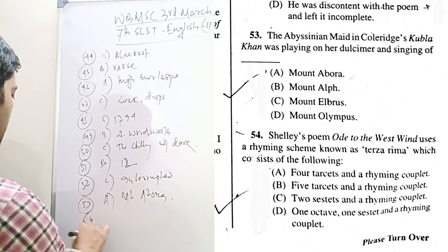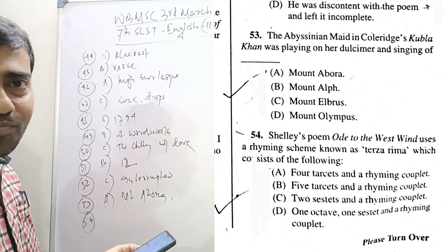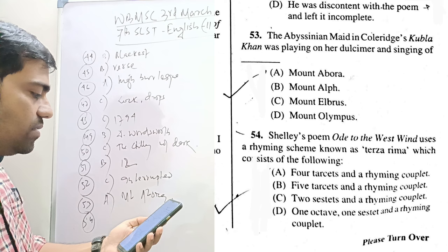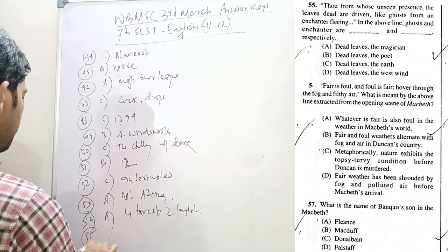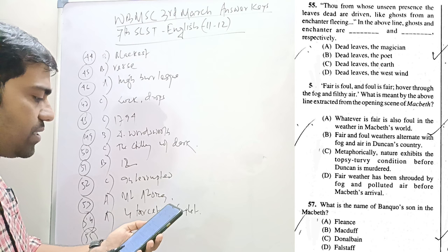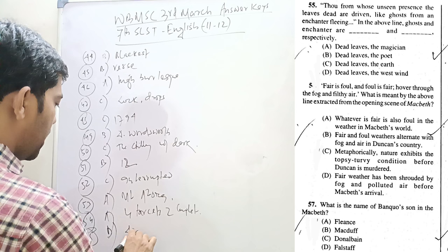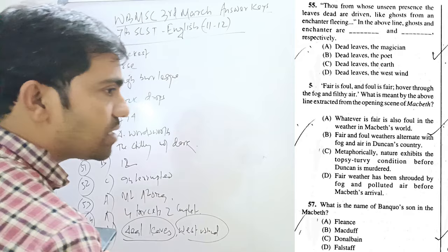Question 54. Shelley's poem Ode to the West Wind uses a rhyme scheme known as Terza Rima, which consists of the following: four tercets plus a rhyming couplet. Question 55. Thou from whose unseen presence the leaves dead are driven, like ghosts from an enchanter fleeing. In the above lines, ghost and enchanter denote the dead leaves and the west wind.